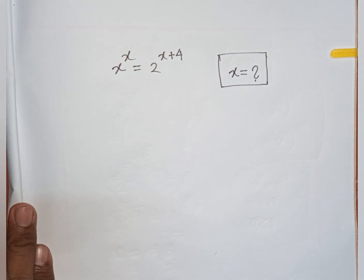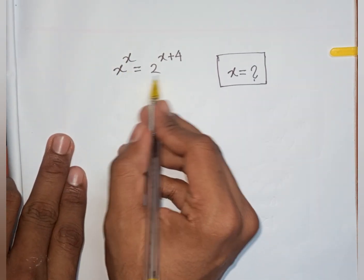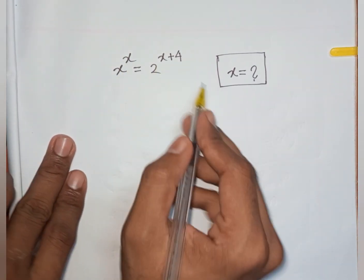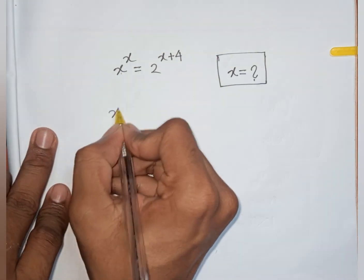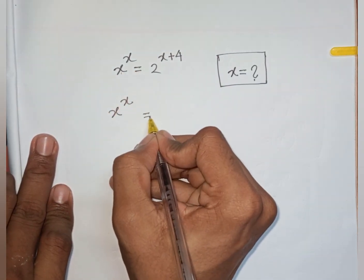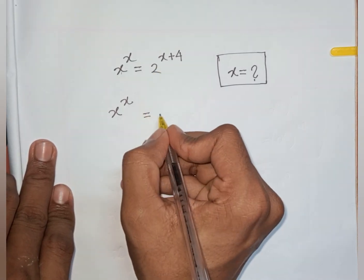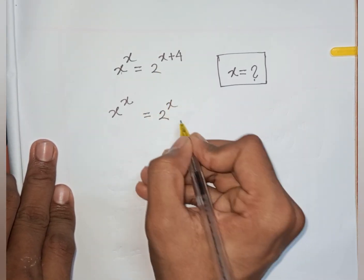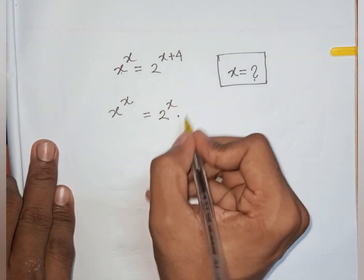How to solve x power x equals 2 power x plus 4. So x power x equals 2 power x plus 4 can be rewritten as 2 power x times 2 power 4.